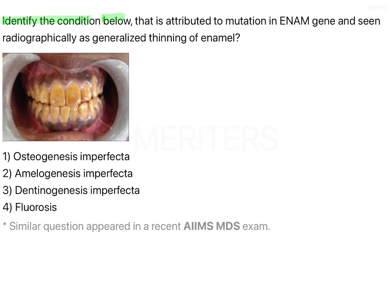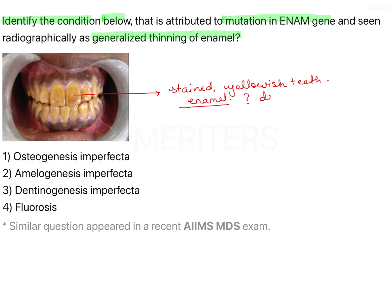Identify the condition attributed to a mutation in the Enam gene, seen radiographically as generalized thinning of enamel. Looking at the image, you see very stained and yellowish teeth; structurally they look okay, but the enamel looks abnormal. Dentine is yellowish-brown in color and enamel is translucent, so if the enamel is thin, the layer of dentine becomes highly visible, causing this kind of appearance.